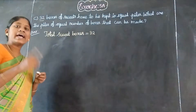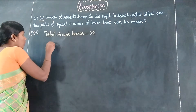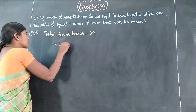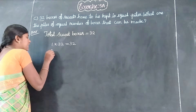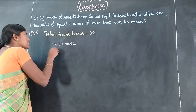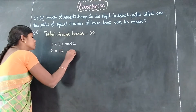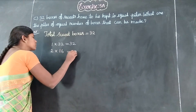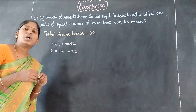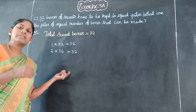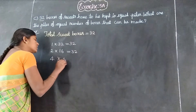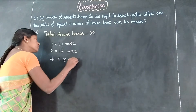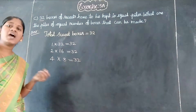First, I assume one times 32 is 32. Two times — sixteen twos are 32. Yes. Three times 32? No. Four times — four eights are 32. Yes.